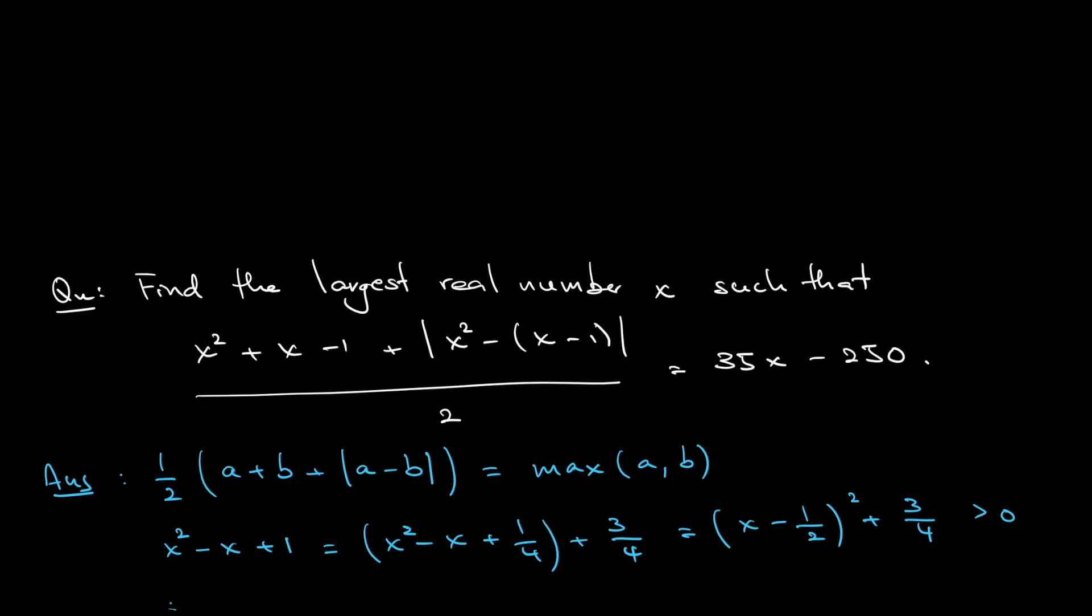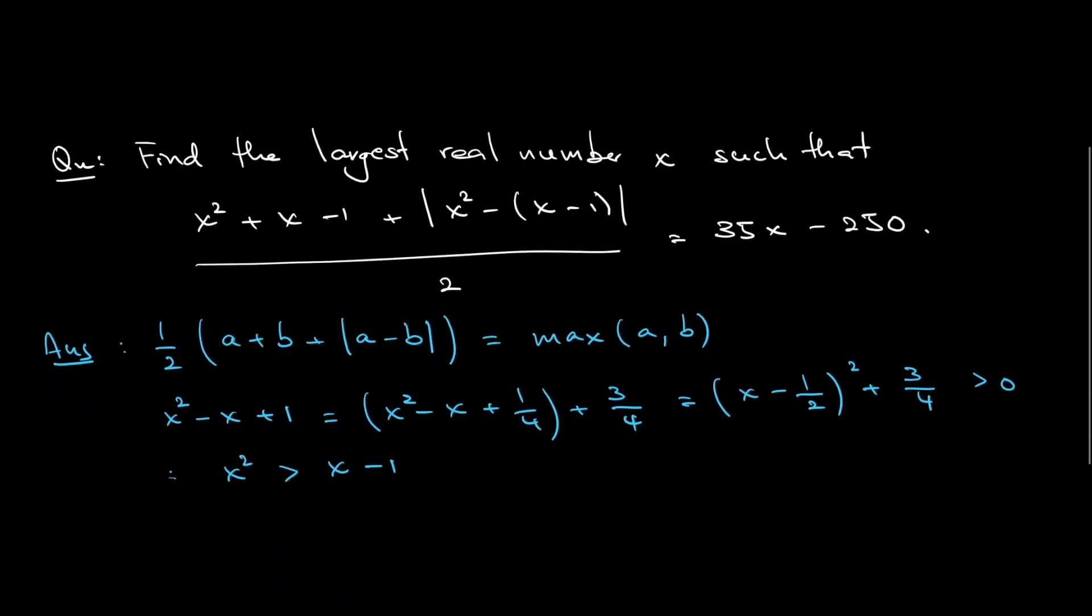So why would I do this? I have x squared minus x plus 1 is greater than 0. I can infer that x squared is always greater than x minus 1. In fact, I just need to shift negative x plus 1 to the right-hand side.